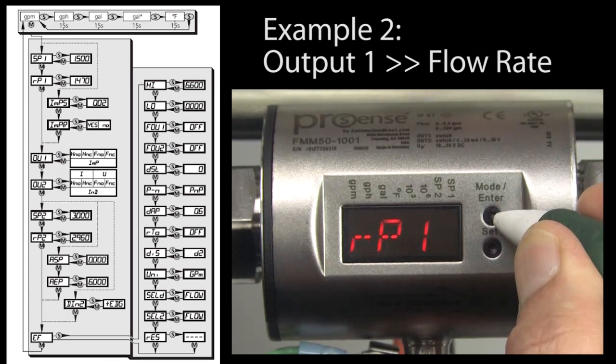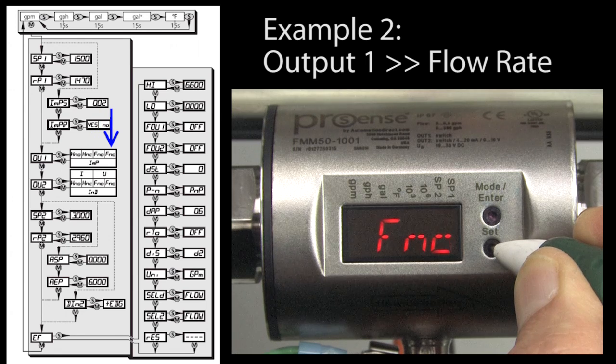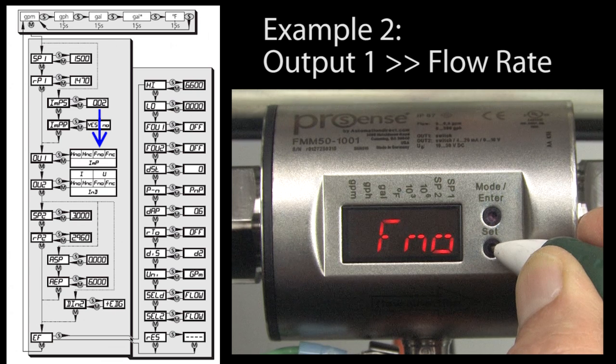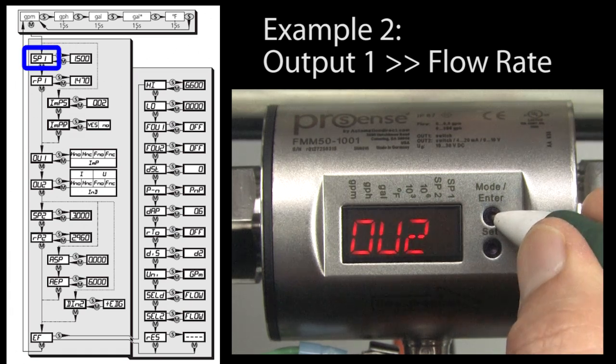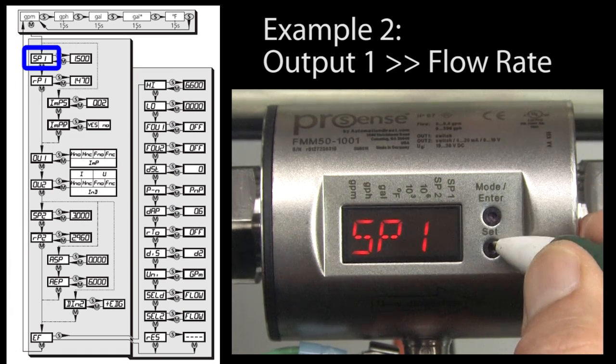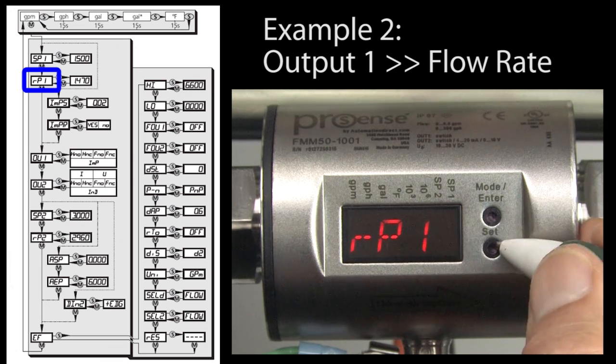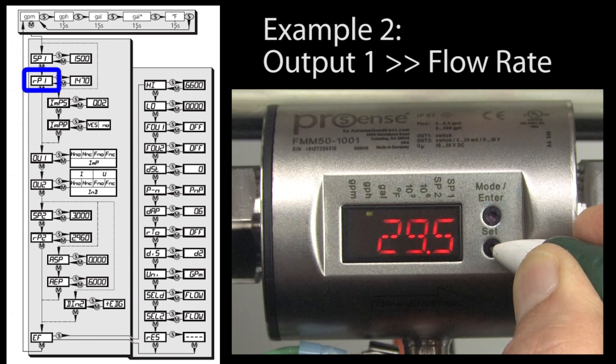Great, output 1 is in flow mode so now we go to output 1 and select the function we want. Hysteresis normally open, hysteresis normally closed, window function normally open or window function normally closed. We'll talk about those in just a minute. Let's use a window function normally open, which says the output will be active if the flow rate is within a range of values. Accept that. Now scroll to SP1 to set the upper limit of the window. Hold the S key down until it stops blinking and then we'll set the upper limit at 40 gallons per hour. Press mode to accept that. Repeat that for the lower limit, which is RP1. We'll use 30 gallons per hour for the lower limit.